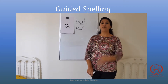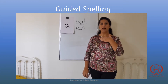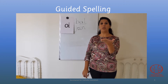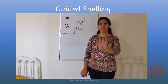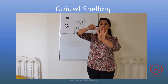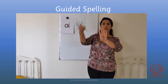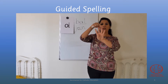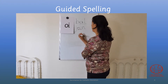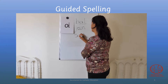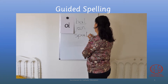Our next word is 'spoil'. Spoil has four sounds. Show me four fingers. Let's spell it on our fingers: S, p, oi, l. Spoil. We're going to write it: S, p, oi, l.